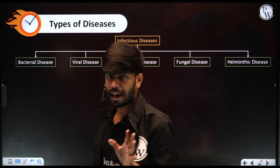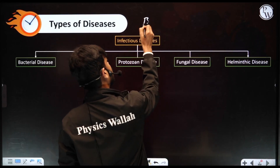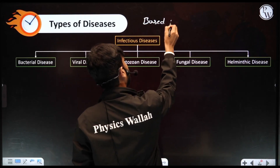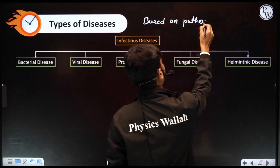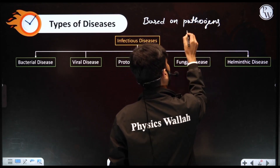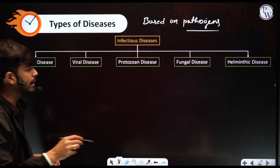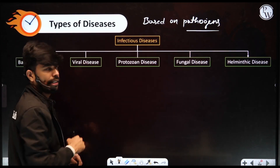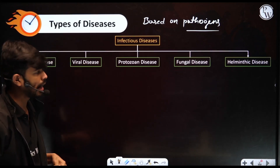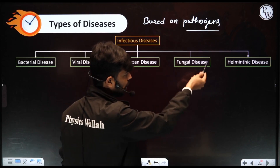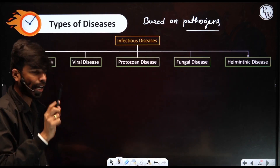Now we are classifying diseases based on their pathogens. Diseases caused by bacteria are called bacterial diseases. Diseases caused by viruses are called viral diseases. Diseases caused by protozoa are protozoan diseases. Similarly, we have fungal diseases caused by fungi and helminthic diseases caused by helminthes.